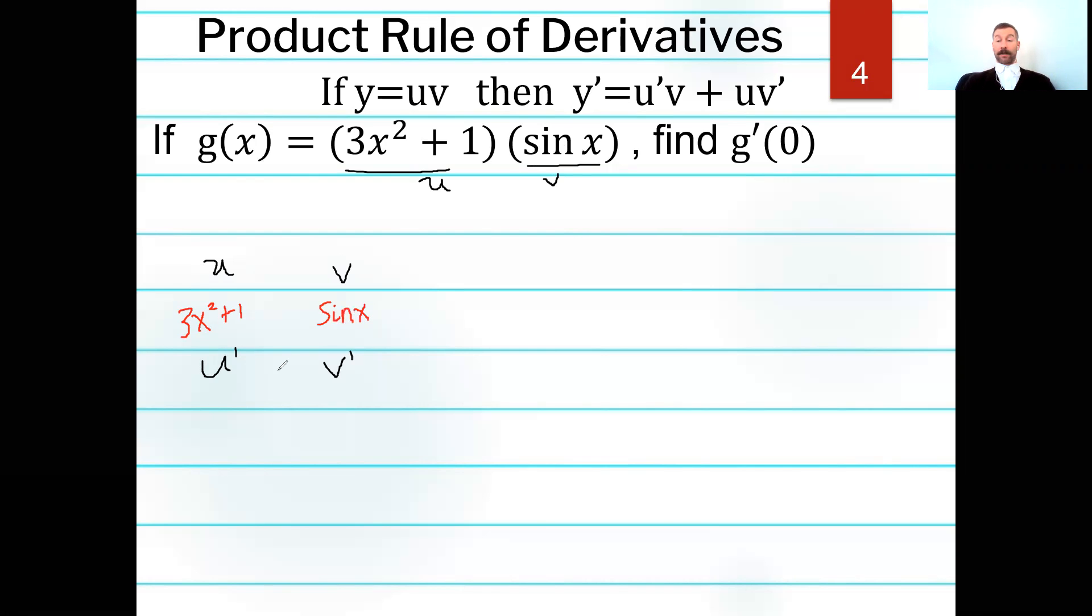And now we still do take the derivatives of each one of these separately. 3x squared using the power rule becomes 6x. A 1 using the power rule would become plus 0. If we take the derivative of a constant it's zero, but I don't need that. And then v prime, the derivative of sine is just cosine. So we have these derivatives.